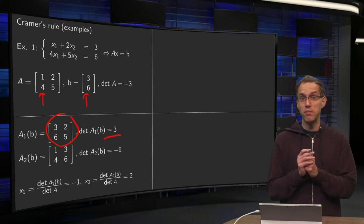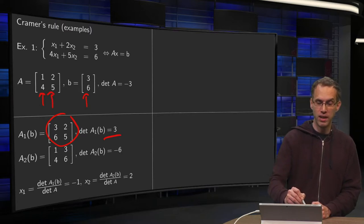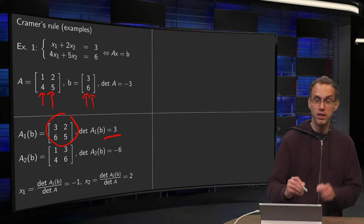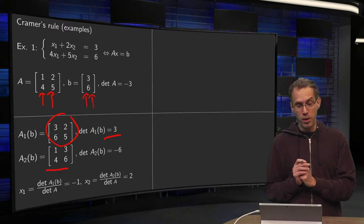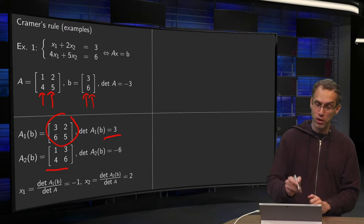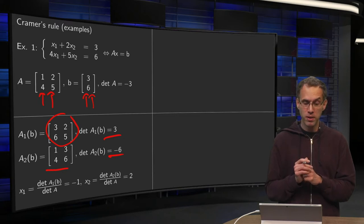Then you do the same for A2(b). So then you replace the second column of A by b. So you get the matrix 1, 4, 3, 6 over here. Compute its determinant. 1 times 6 minus 3 times 4 equals minus 6. There we go. You have the determinant of A2(b).